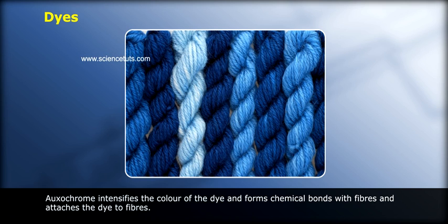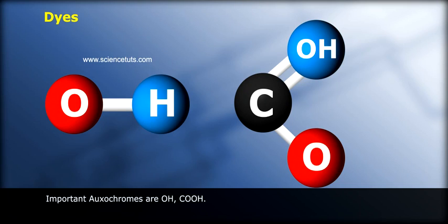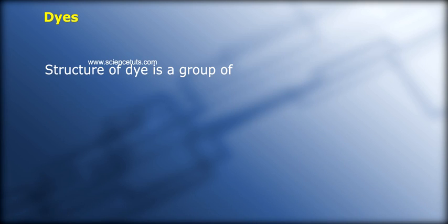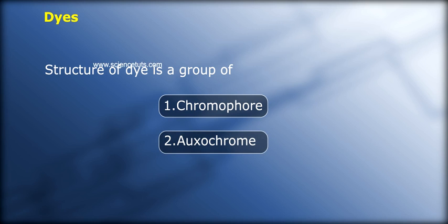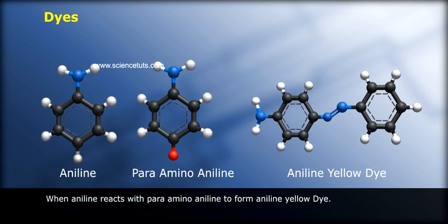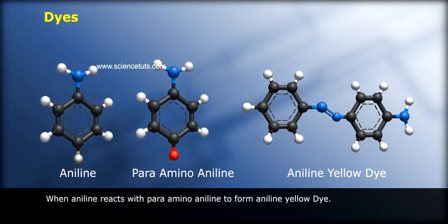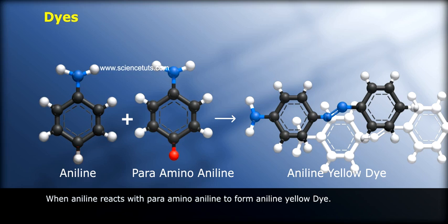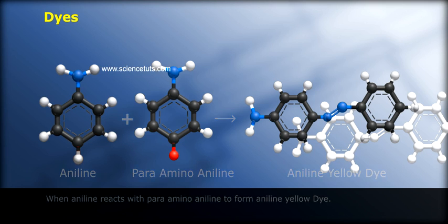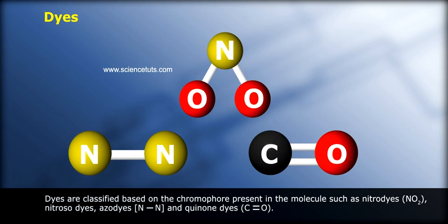The oxochrome attaches the dye to fibers. Important oxochromes are -OH and -COOH. The structure of a dye is a group of one chromophore and one oxochrome. When aniline reacts with para-aminoaniline, it forms aniline yellow dye. Dyes are classified based on the chromophore present in the molecule.